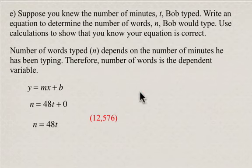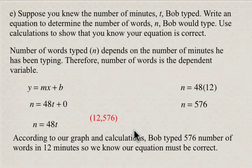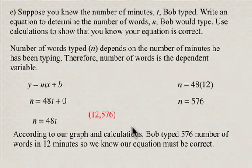And if we sub in just to, now this is where it says use calculation to show you know your equation is correct. We found that there is a point, 12, 576. So if we use that point, we sub in for here, t is 12 because that's 12 minutes. And when we do 48 times 12, we get 576. So that means that if Bob types for 12 minutes, he types 576 words. And that's what we found when we were doing the calculations before and on our graph. So that means that the equation then is n equals 48t. So this is how we use calculations to show we know our equation is correct. So according to our graph and our calculations, Bob typed 576 words in 12 minutes. So we know our equation must be correct.